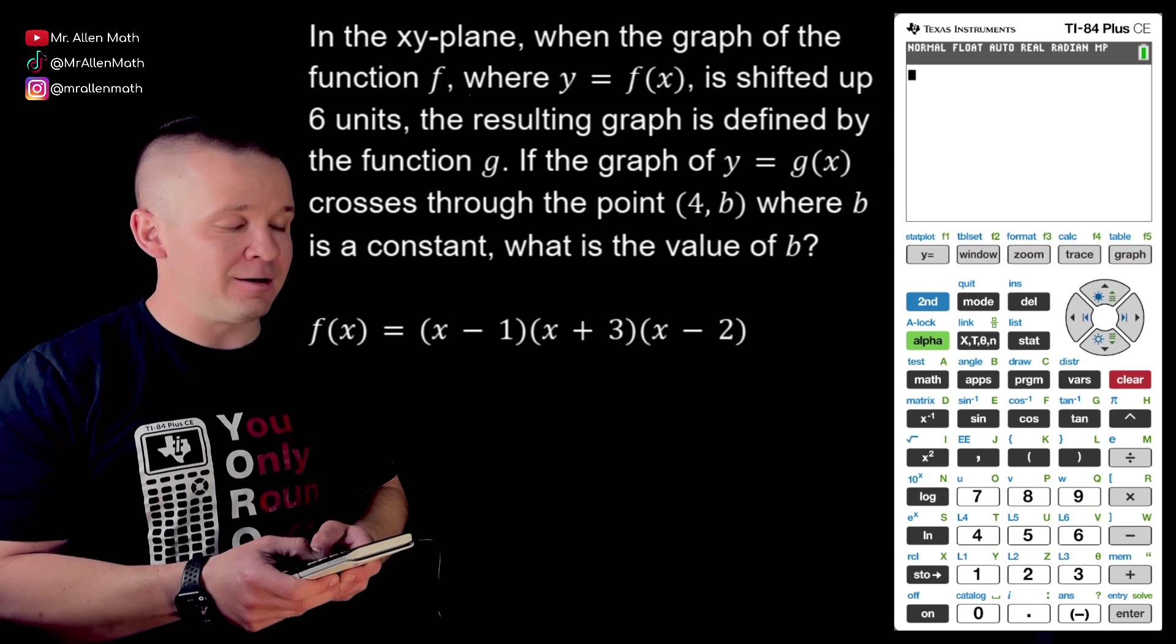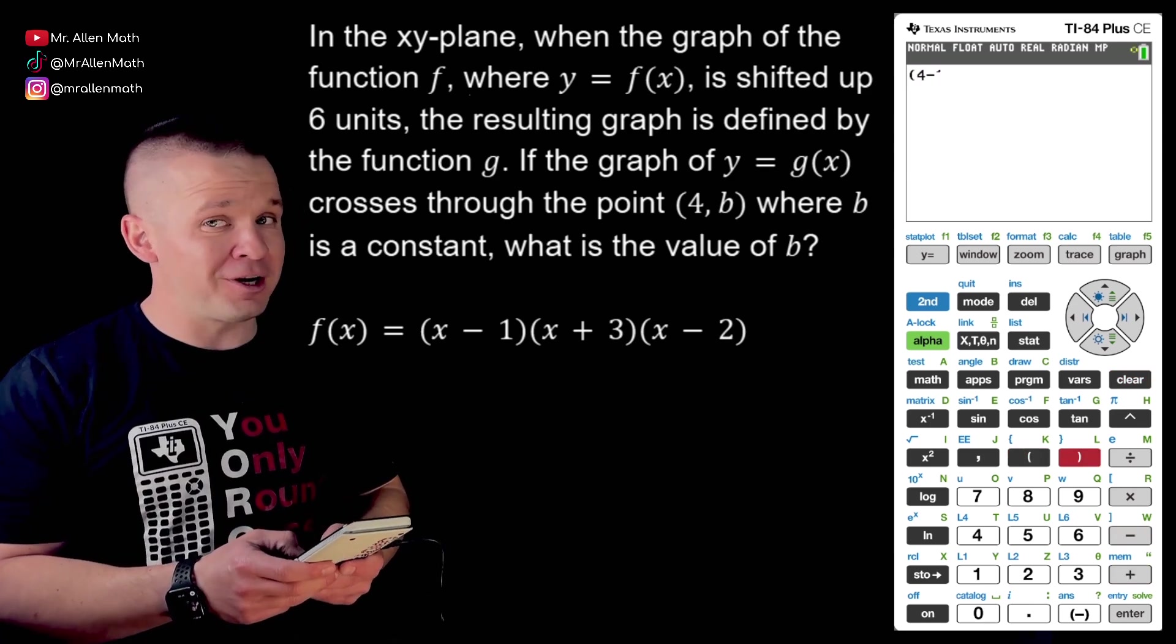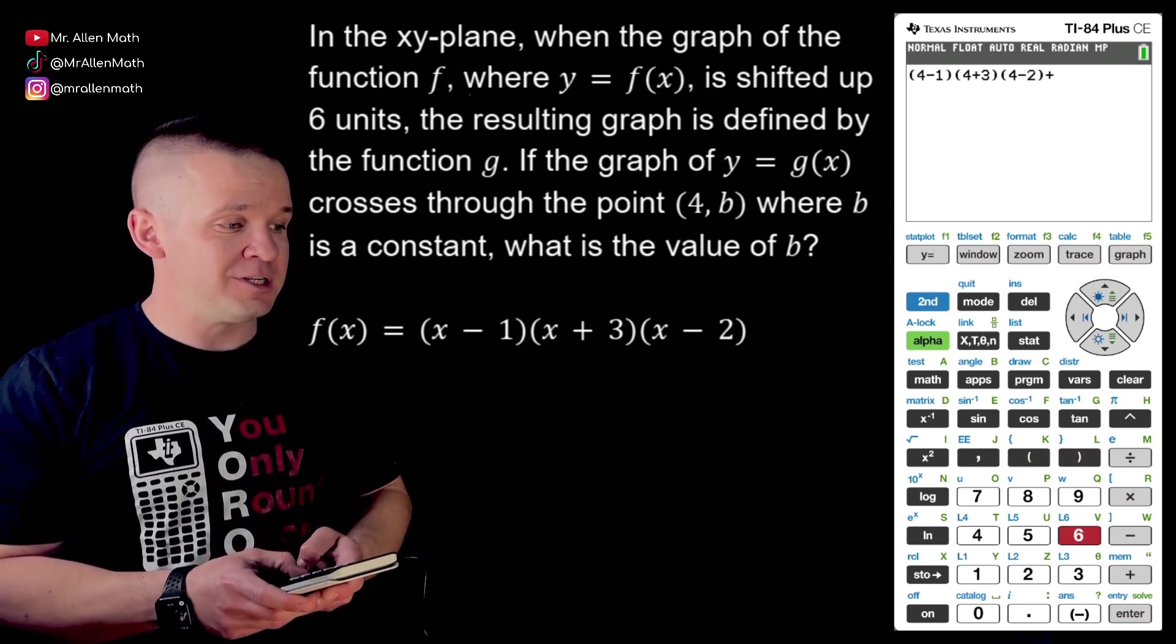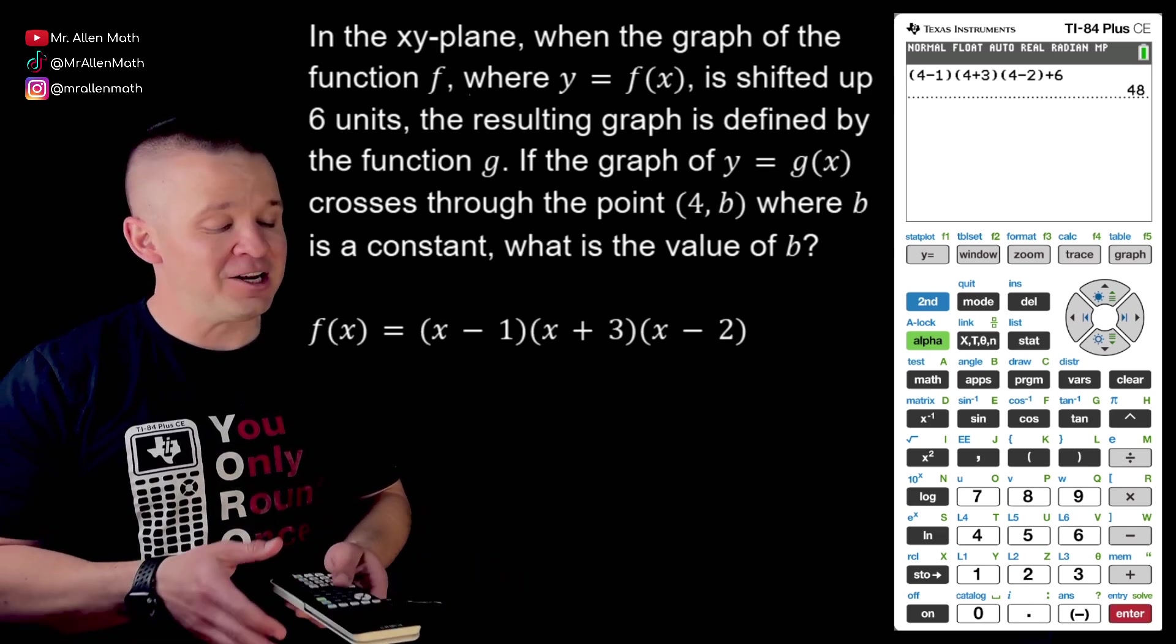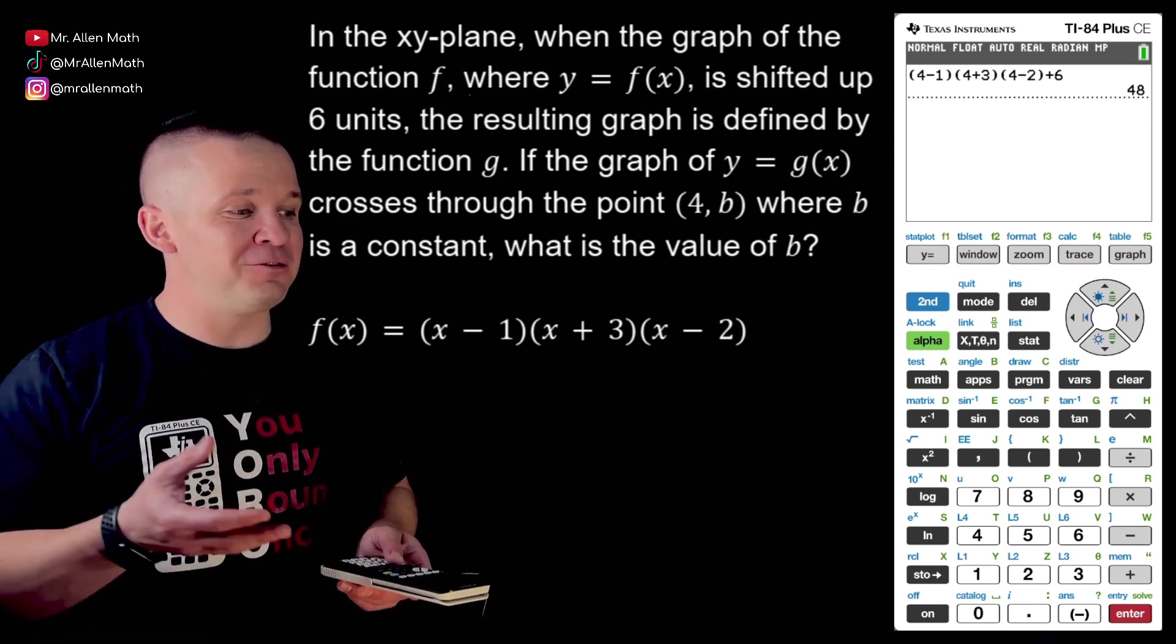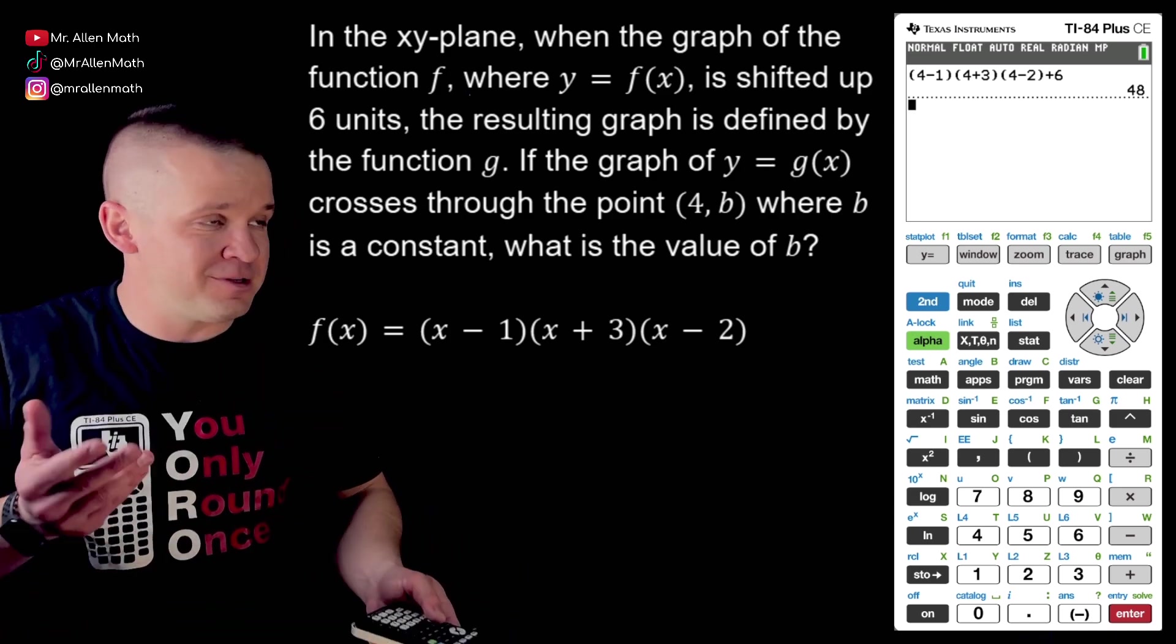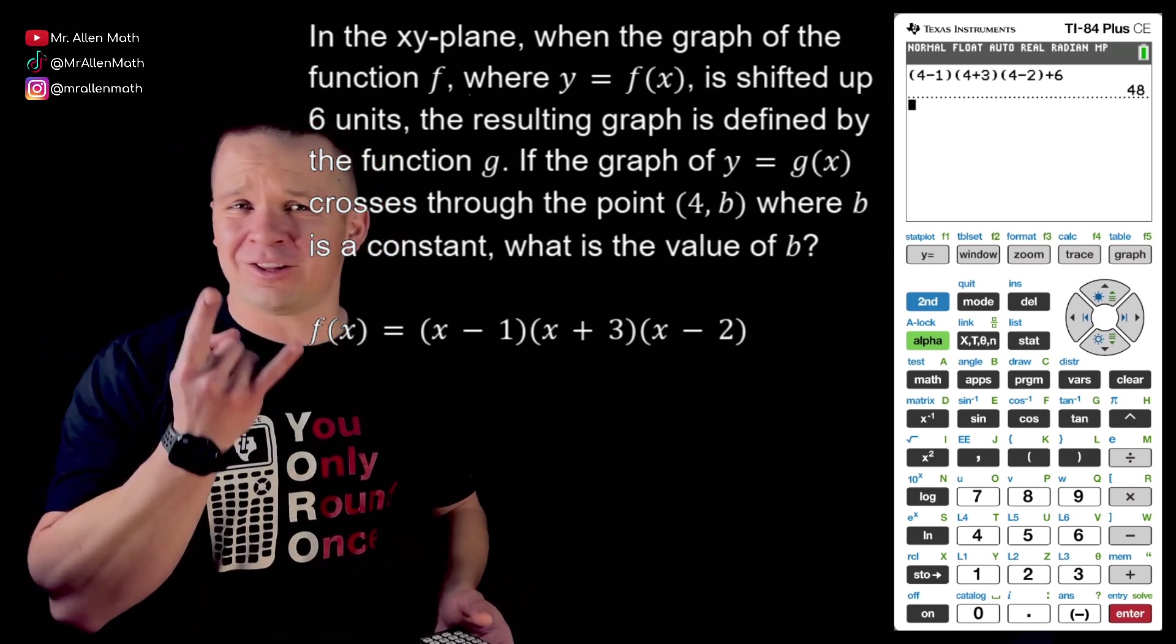And I'm going to type in four minus one, four plus three - I'm plugging four in for x - and then we have four minus two. And then we said we're shifting up six units. Hit enter. Forty-eight. That's it. That is literally all you have to do on that problem there. The wording is a little bit confusing, but it's asking us for what's the constant b when x is four and the original guy was shifted up six. That's it guys, forty-eight's your answer. Move on. Type it in. Move on. You're crushing this thing. You got two in a row.